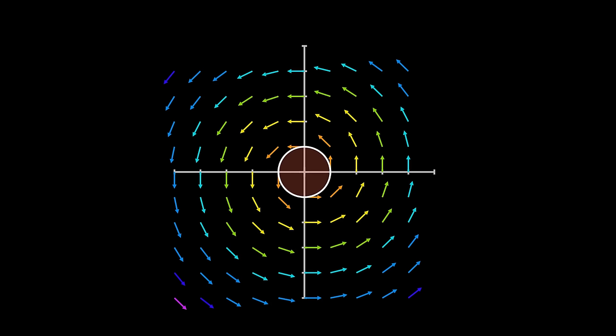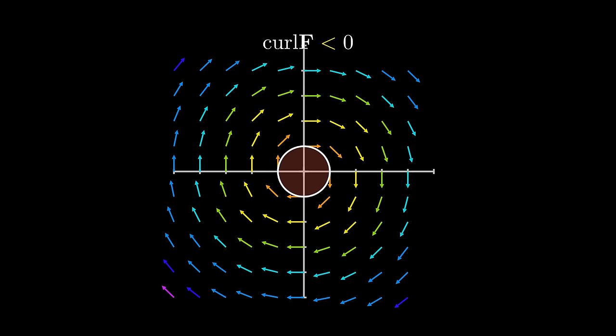The curl of a vector field in two dimensions gives a sense of rotation over a region in the vector field. The curl can describe how clockwise or counterclockwise the region is. Positive curl indicates counterclockwise rotation, and negative curl indicates clockwise rotation.